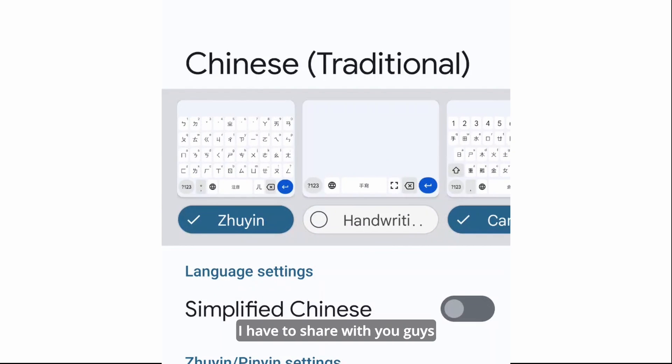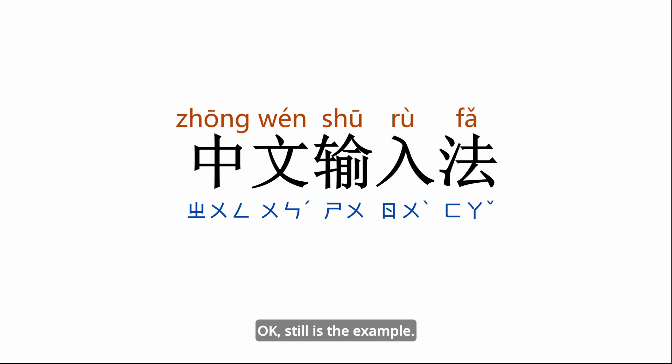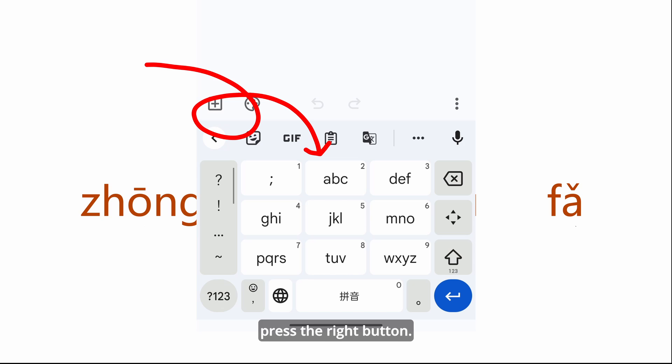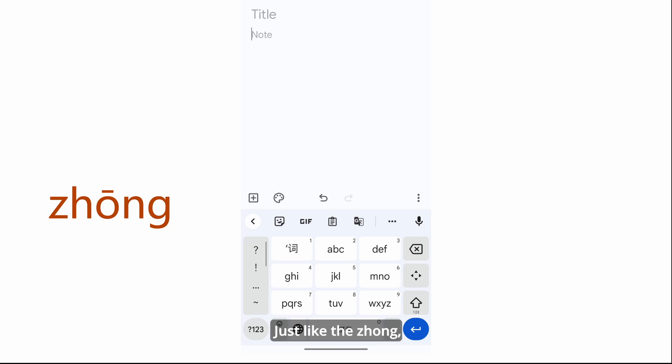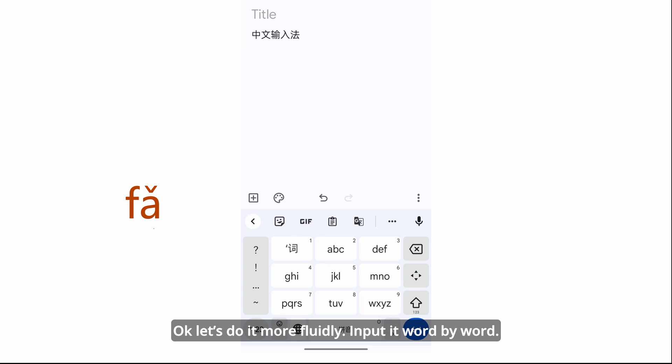Okay, still the same example. Actually, it's very easy. We just need to according to the pinyin of the characters and the letters painted on the keyboard, press the right button. Just select the character. Zhong is button 9-4-6-6-4. Then wen is 9-3-6. Shu is 7-4-8. Ru is 7-8. Fa is 3-2. Okay, let's do it more fluidly, input this word by word.